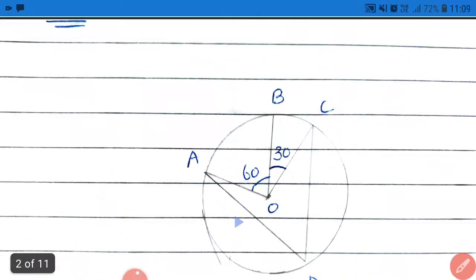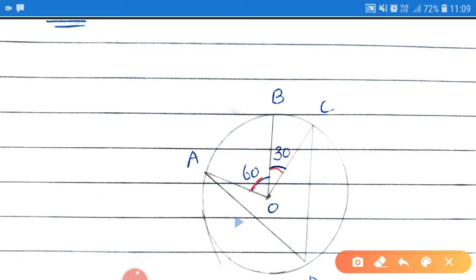Now, as we can see in the figure, if we add this and this, yani ki, ye 60 aur 30 waale angle ko plus karenge, to humay ye angle milega. And the name of that angle is angle AOC. Yani ki, agar hum angle AOB aur BOC ko plus kare, to humay milega angle AOC.